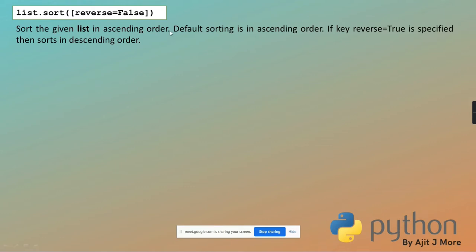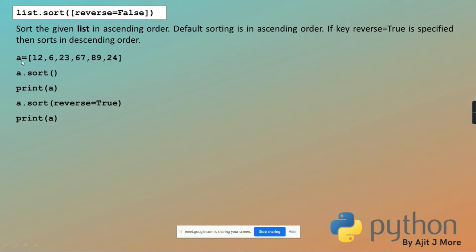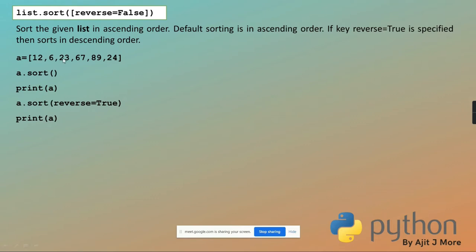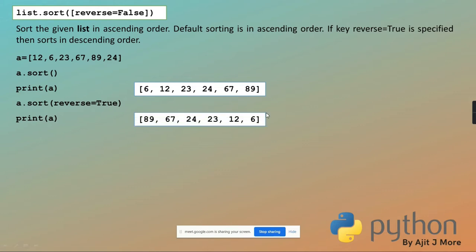By default, sort() does ascending order because reverse is False. If you pass reverse=True, it arranges elements in descending order. It modifies the list itself — a.sort() is an in-place sort. When you print the list after sorting, it will be in ascending order by default. With reverse=True, you get 89, 67, 24, 23, 12, 6 — arranged in reverse order.